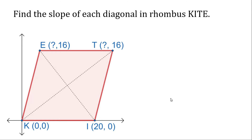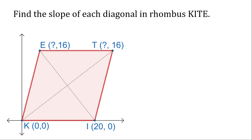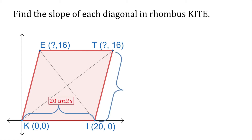Find the slope of each diagonal of the rhombus kite. We need first to find the value of the unknown coordinates. To do that, we think about the properties of this figure. We know this is a rhombus, and a rhombus has four equal sides. We can see that one side measures 20, so the other sides also measure 20.